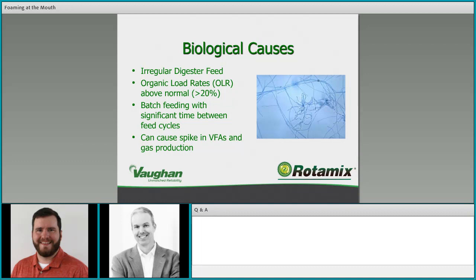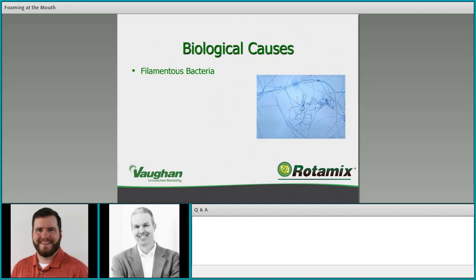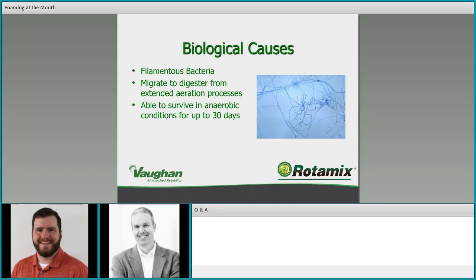Those imbalanced feed cycles can lead to swings in VFA production and gas production that create the conditions for foaming — as well as other issues like pH swings and digester volume problems. Another biological issue is filamentous bacteria, which has a physical aspect in how it interacts with surface tension and bubble stability. From a biological standpoint, they migrate to the digester from an extended aeration process and are able to survive in anaerobic conditions for up to 30 days.